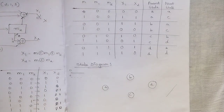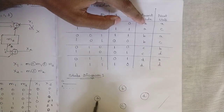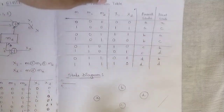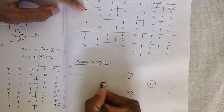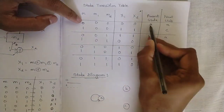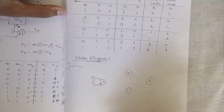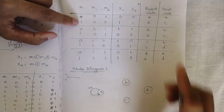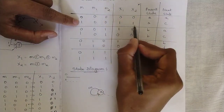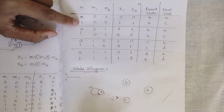Start from state A. When present state is A and input m=0, next state is also A — draw a bold self-loop from A to A and label it with output 00. When present state is A and input m=1, next state is C — draw a dotted line from A to C and label it with output 11.